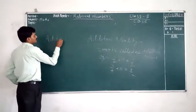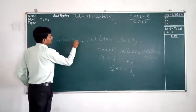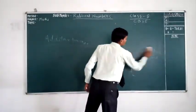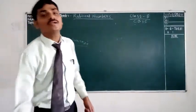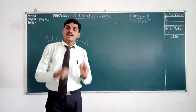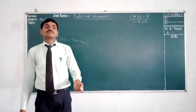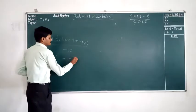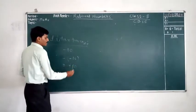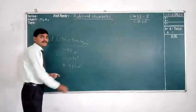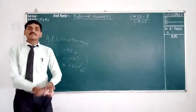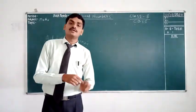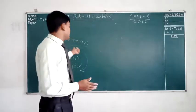Now, what about the additive inverse? The negative of any number is known as the additive inverse. For example, the additive inverse of −10 is +10. So −10 is the additive inverse of +10, and +10 is the additive inverse of −10. Similarly, −3 is the additive inverse of +3, and +3 is the additive inverse of −3. So the negative of any number is known as the additive inverse.